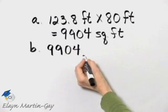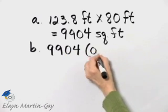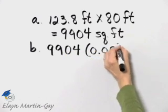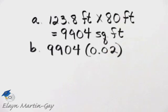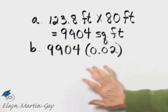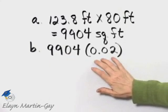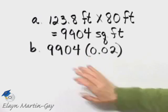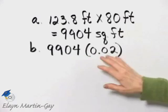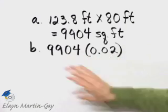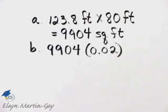And then remember we're told that she needs 0.02, and what was that? That was ounces per square foot. So if this is the area of her lawn in square feet, and she needs 0.02 ounces per square foot, we multiply 0.02 by 9,904. And that's how we find how many ounces then she needs of the insecticide.